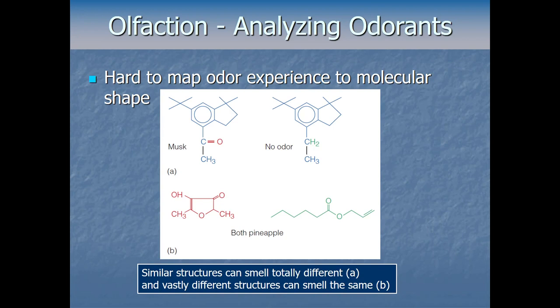Part of why olfactory identification is so hard is that it's difficult to directly map odor experience to molecular shape. Two very similar-looking chemical structures can produce very different perceived smells — one smells clearly of musk, the other has no smell at all. Conversely, very different-looking chemical structures can smell very similar; both examples in panel B are described by everyone as smelling like pineapple. That's just the first complication making odor identification challenging.